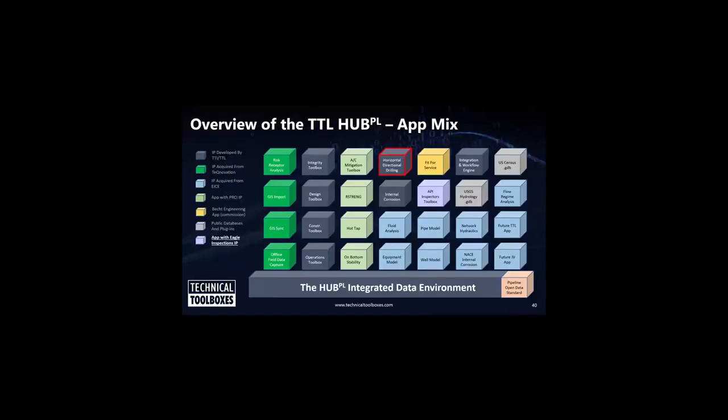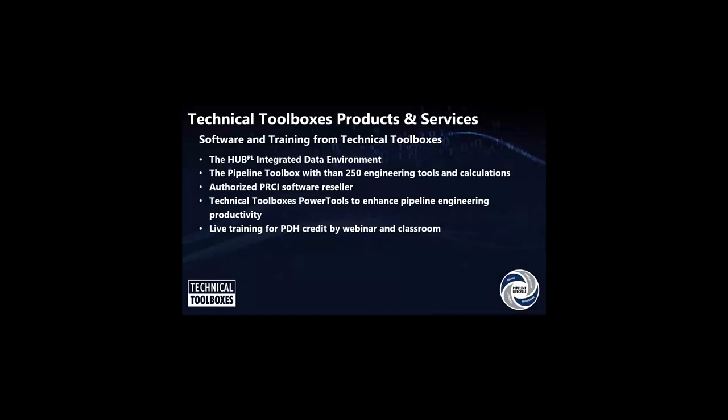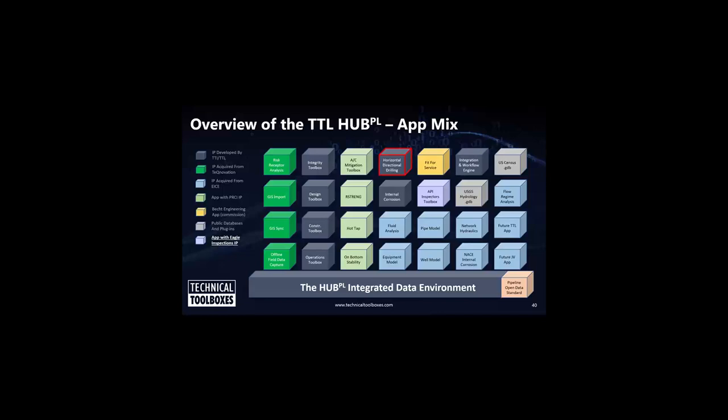This infographic identifies different sources of applications and data available on the Pipeline Hub platform along with their origin. The dark blue is intellectual property developed within Technical Toolboxes; other colors indicate either data or applications integrated from external sources, and gray shows public data and plug-ins. The Hub draws on this eclectic mix together in one integrated data environment using the Pipeline Open Data Source — or PODs — including the HDD Power Tool. Once data is loaded into the integrated environment, it's easily accessible and shared for use in any of the applications on the platform.